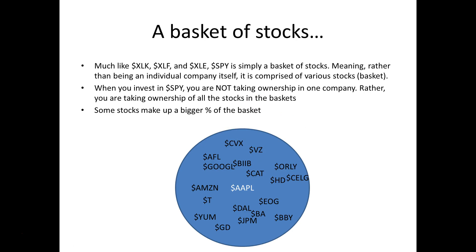When hedge funds and mutual funds invest in the SPY, they're not taking ownership of one company. SPY is not a company itself — because it's a basket, when they invest in the SPY they're taking ownership in all of the stocks that make up that basket. Some stocks make up a bigger percentage of the basket, but when big money comes in and out of the SPY, it's truly going in and out of those big 500 names. You've got energy names, tech names, Caterpillar, Apple, banking, airlines — all kinds of different sectors.